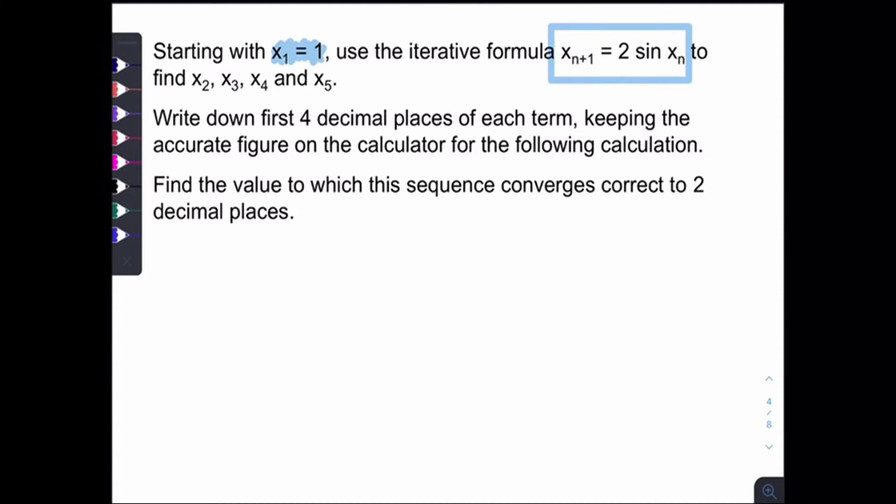You are asked to write down the first four decimal places of each term, keeping the accurate figure on the calculator for the following calculation. And find the value to which this sequence converges, correct to two decimal places.